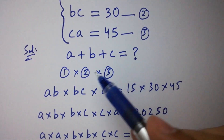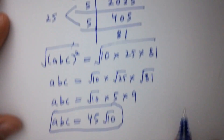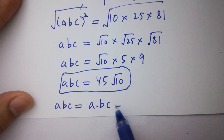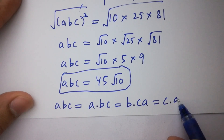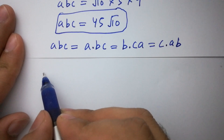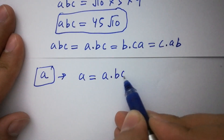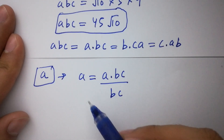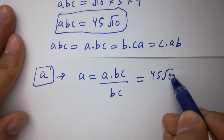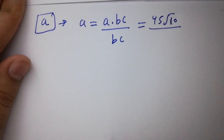But we want to find the value of a plus b plus c. For this, we have to find a, then b and c. Note that abc equals a times bc, b times ca, and c times ab. To find a, we use a equals abc over bc, which equals 45 square root of 10 over bc. Here bc equals 30, so we have 45 square root of 10 over 30.